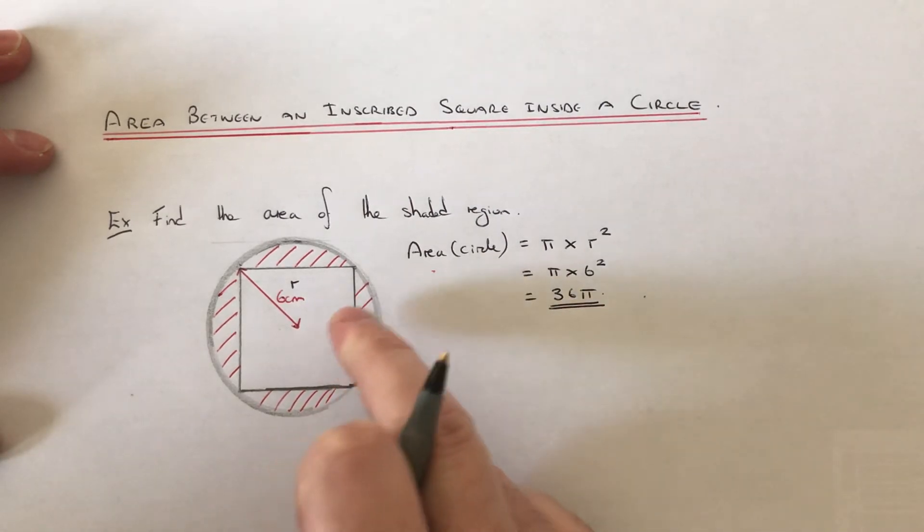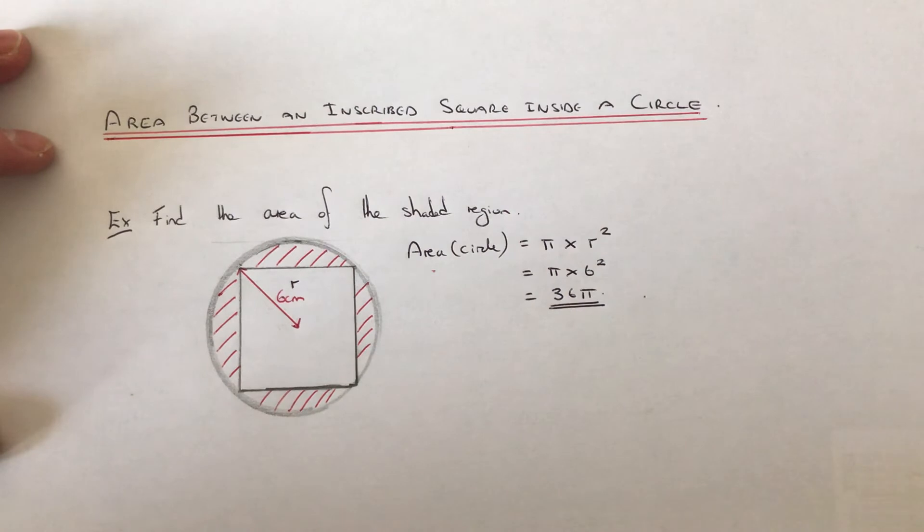Next thing we need to do is work out the area of the square. But if you notice, we don't have the side length of the square, so we need to work this out.